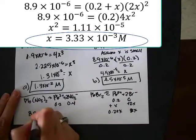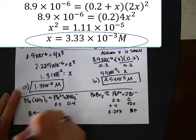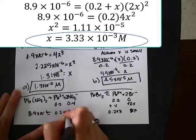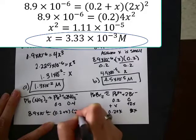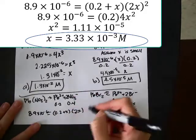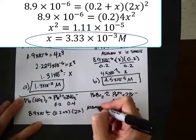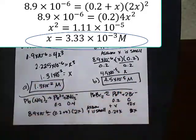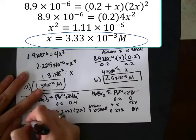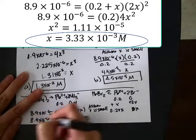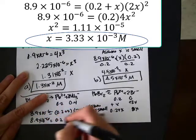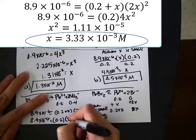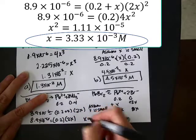X and 2X. All right, so I'm ready to plug it in, 8.9 times 10 to the minus 6, 0.2 plus X, and then 2X. And I forgot to do squared again. I can't believe it. So again, I put it up at the top. This time, I assume X is small, and that just gives me the 0.2 instead of 0.2 plus X, but for the lead. And then the 2X is squared.